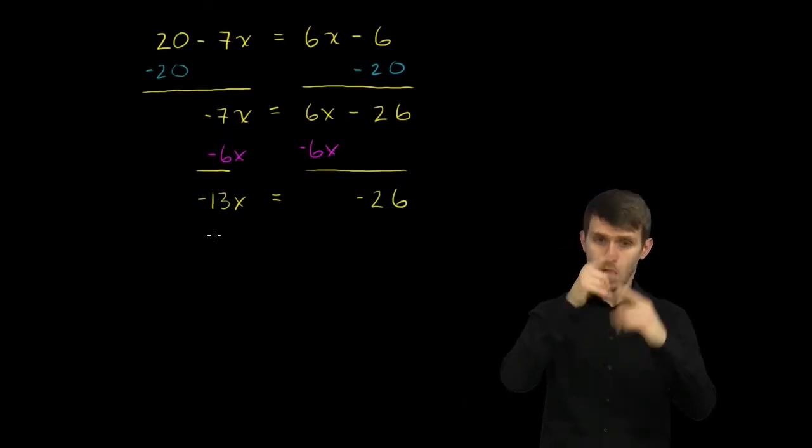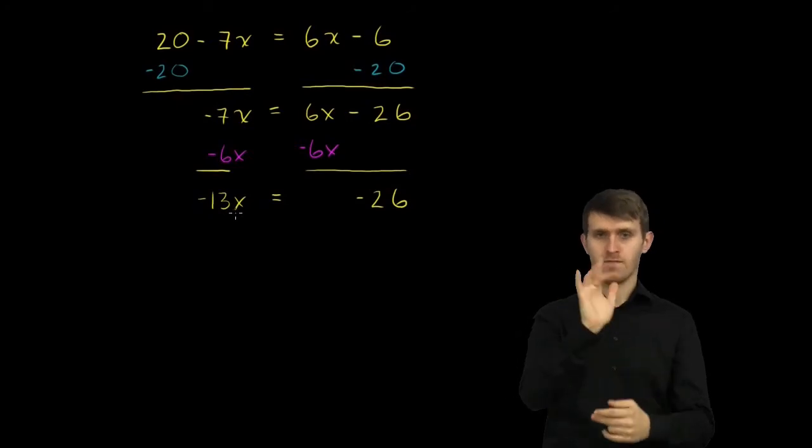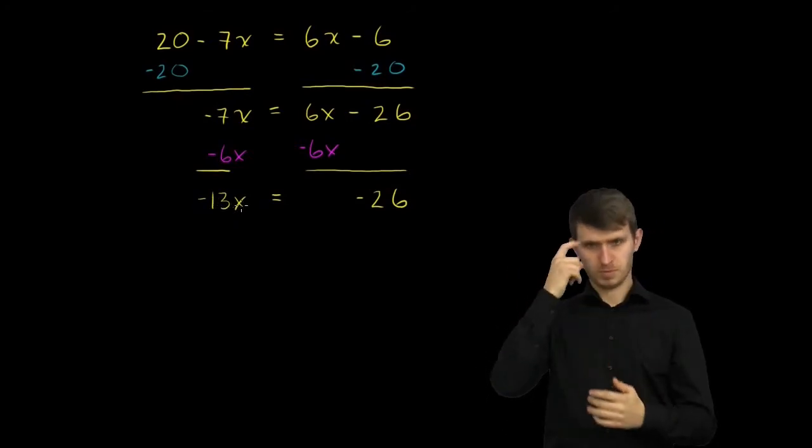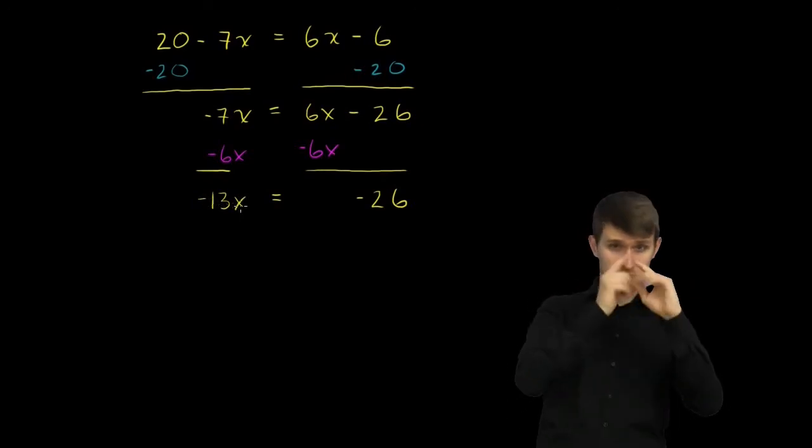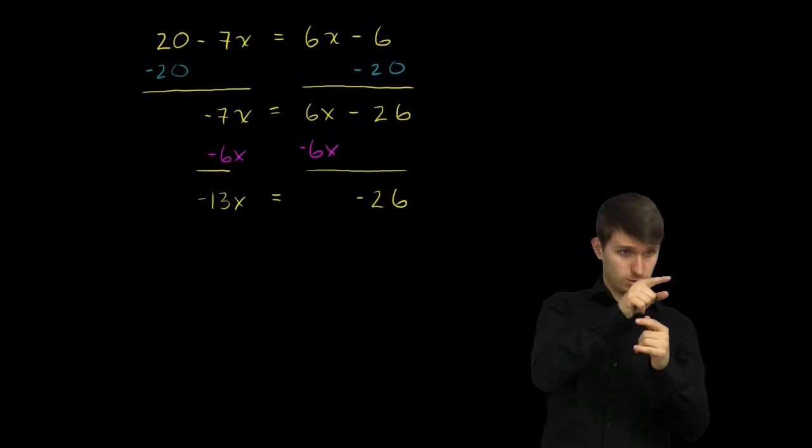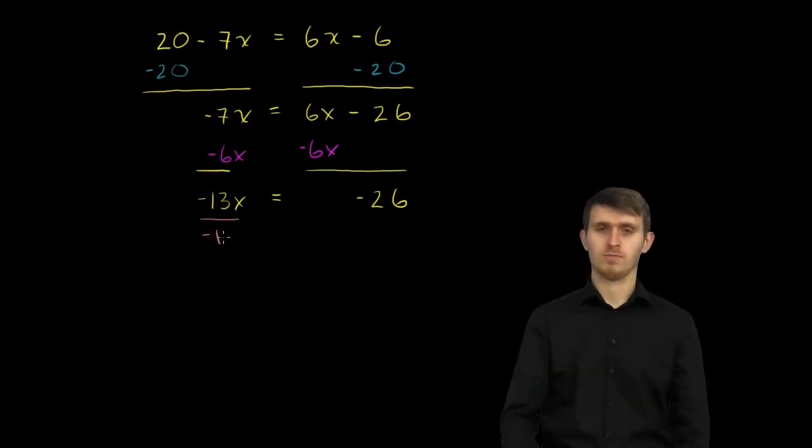Now our whole goal is to isolate the x. And we have a negative 13 times the x here. So the best way to isolate it is, if we have something times x, if we divide by that something, we'll isolate the x. So let's divide by negative 13.